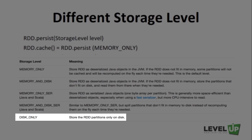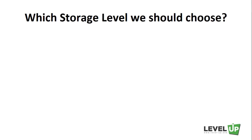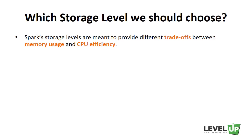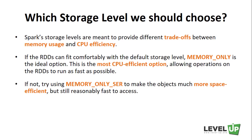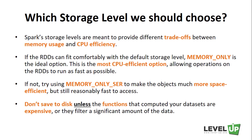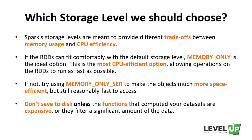Disk-only stores the RDD partitions only on disk. You might ask which storage level you should choose. Spark storage levels are meant to provide different trade-offs between memory usage and CPU efficiency. If the RDDs fit comfortably with the default storage level, memory-only is the ideal option — it is the most CPU-efficient, allowing operations to run as fast as possible. If not, try memory-only-ser to make objects more space-efficient while still reasonably fast to access. Don't save to disk unless the functions that compute your datasets are expensive or filter a significant amount of data; otherwise, recomputing a partition may be as fast as reading it from disk.